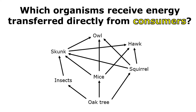This question asks: which organisms receive energy transferred directly from consumers? The oak tree is my producer, and the insects, mice, and squirrel are getting energy directly from producers — they're not eating other consumers. But the skunk is consuming insects, mice, and squirrels. The owl is consuming skunks, mice, and squirrels. And the hawk is consuming skunks, mice, and squirrels. So the skunk, the owl, and the hawk are all getting energy directly from other consumers.